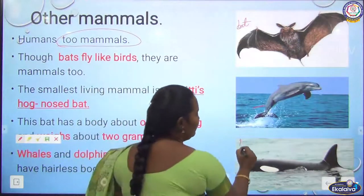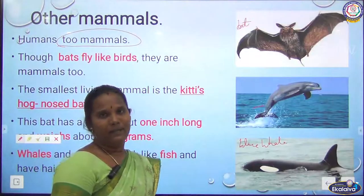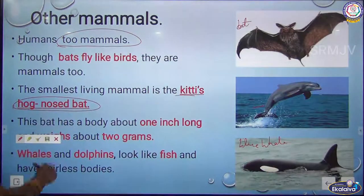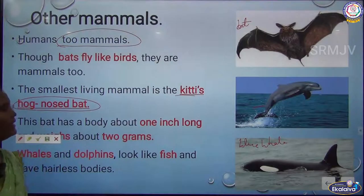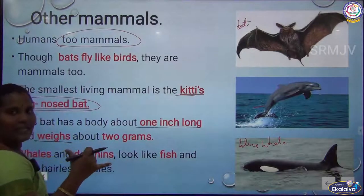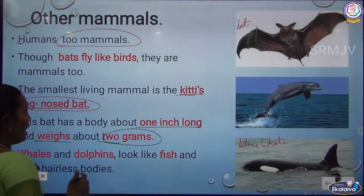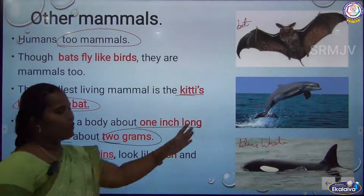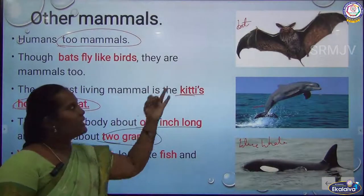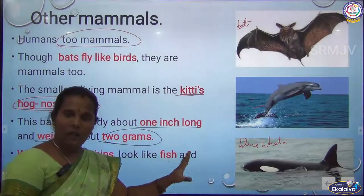The blue whale is the largest water mammal in the world. The bat — specifically Kitti's hog-nosed bat — is the smallest mammal in the world, only one inch long and weighing just two grams. The dolphin and blue whale both live in water, but they are considered mammals, not fish.